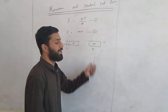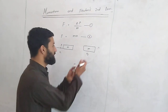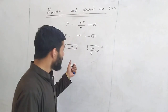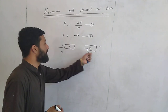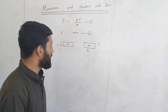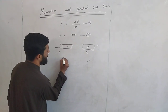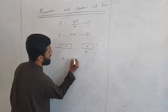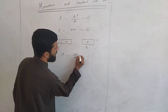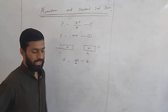As we know that mass is constant, so here acceleration is produced in the body. Whenever velocity changes from initial to final, acceleration is produced. That acceleration is given as the rate of change of velocity.